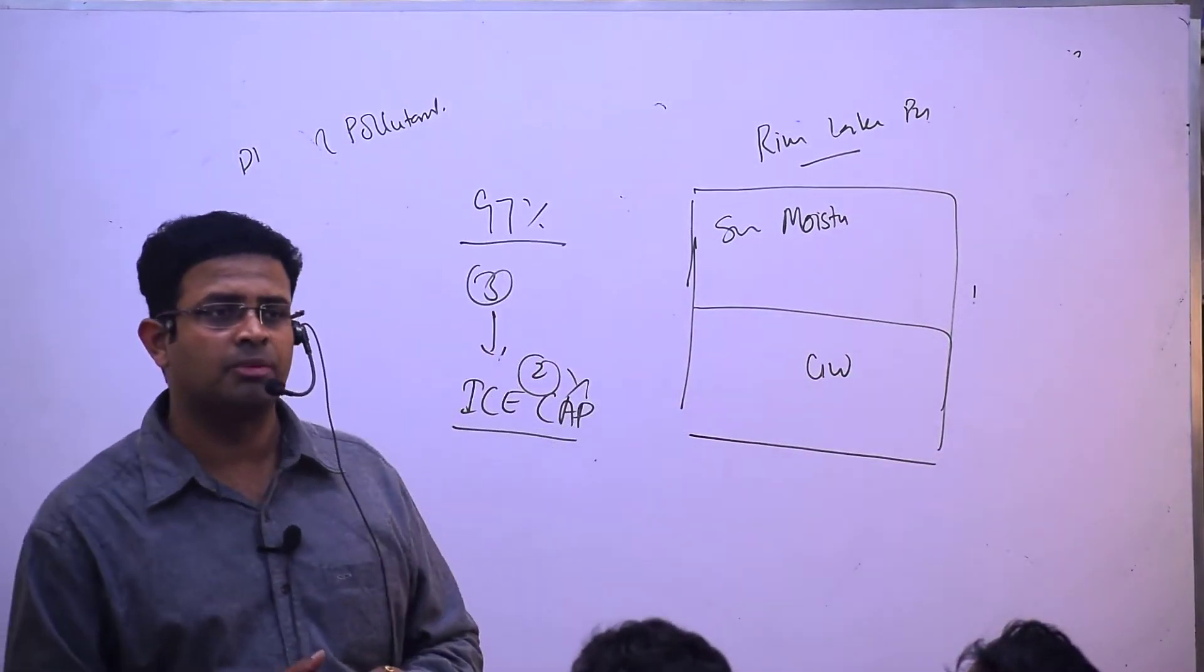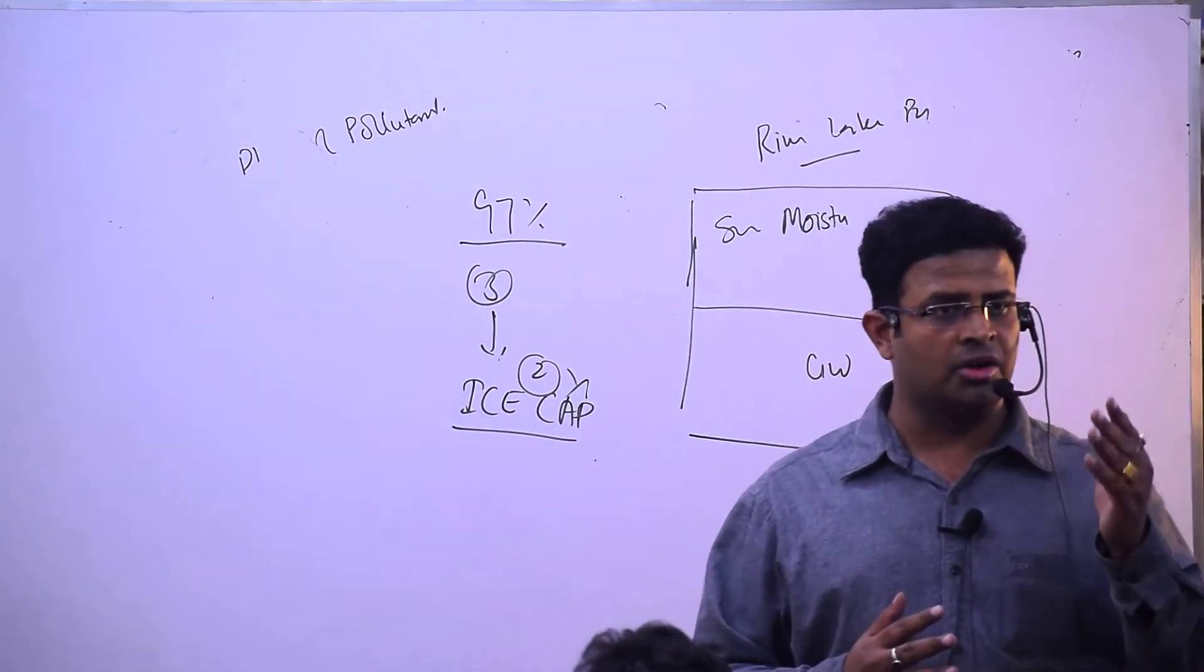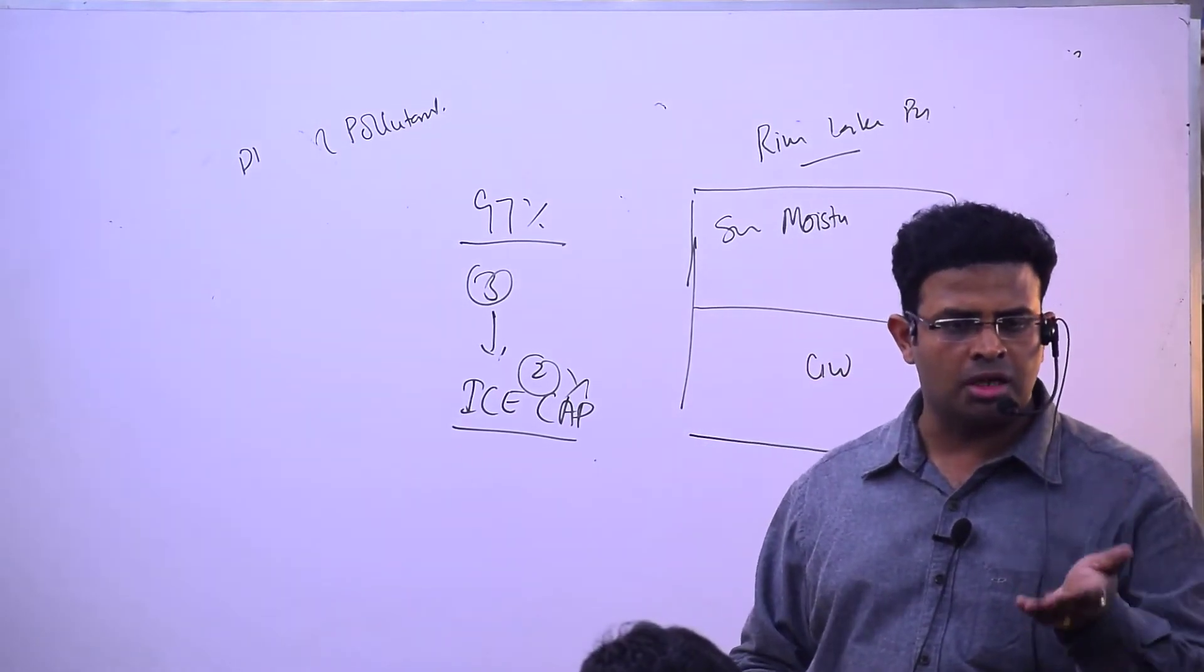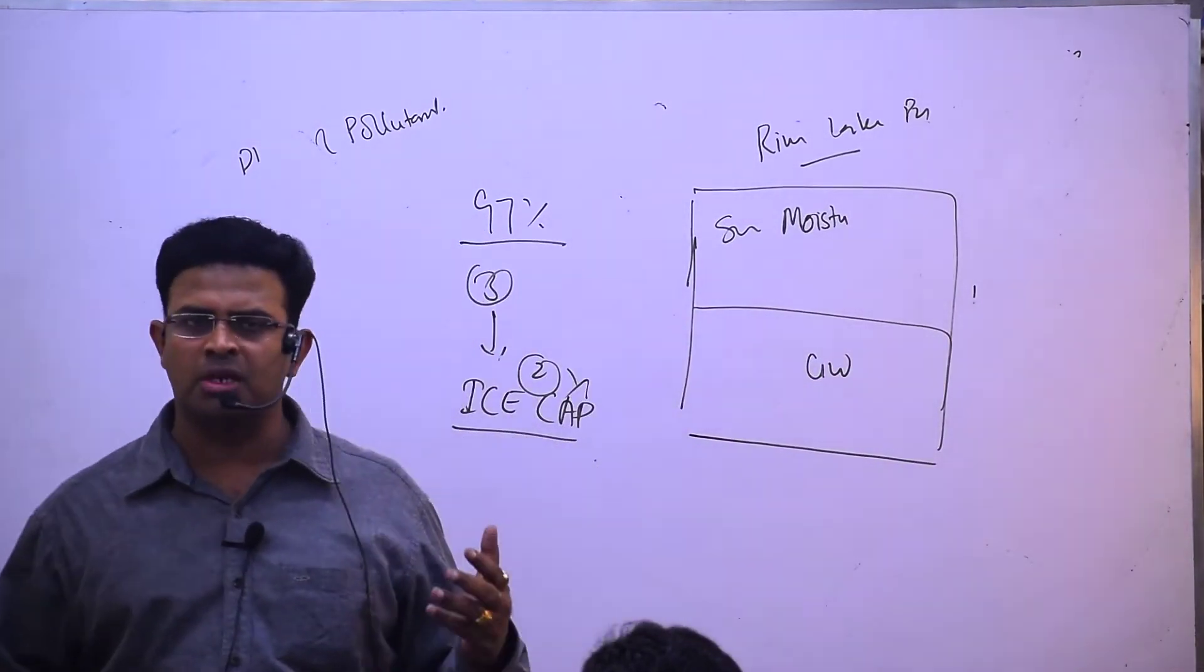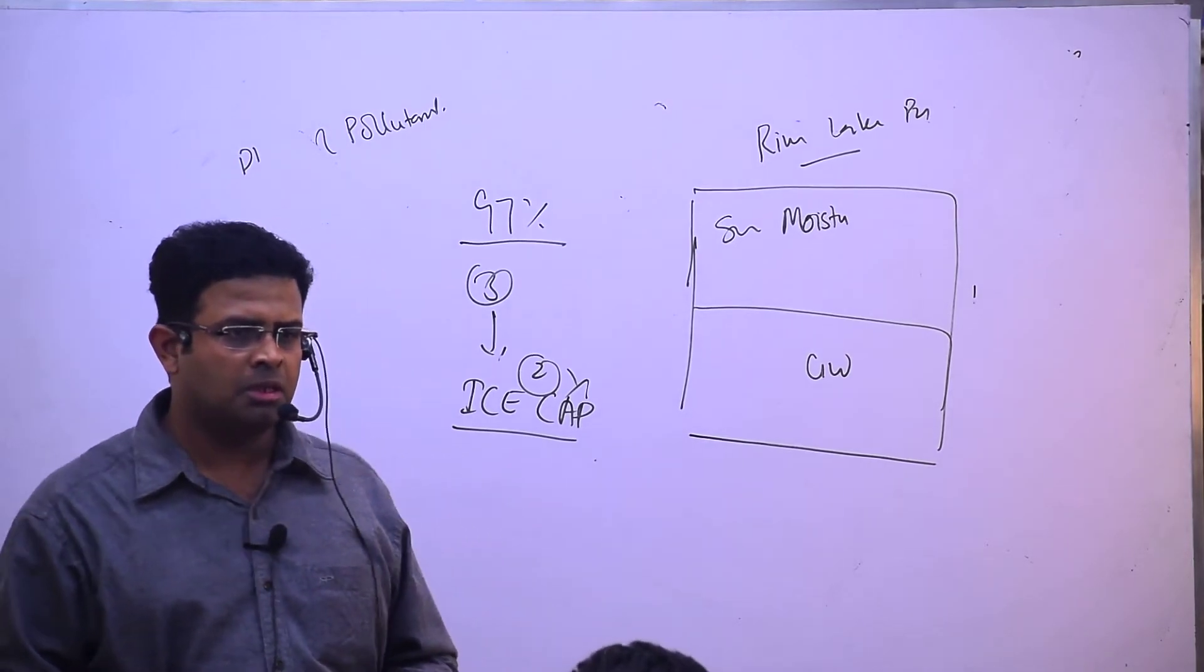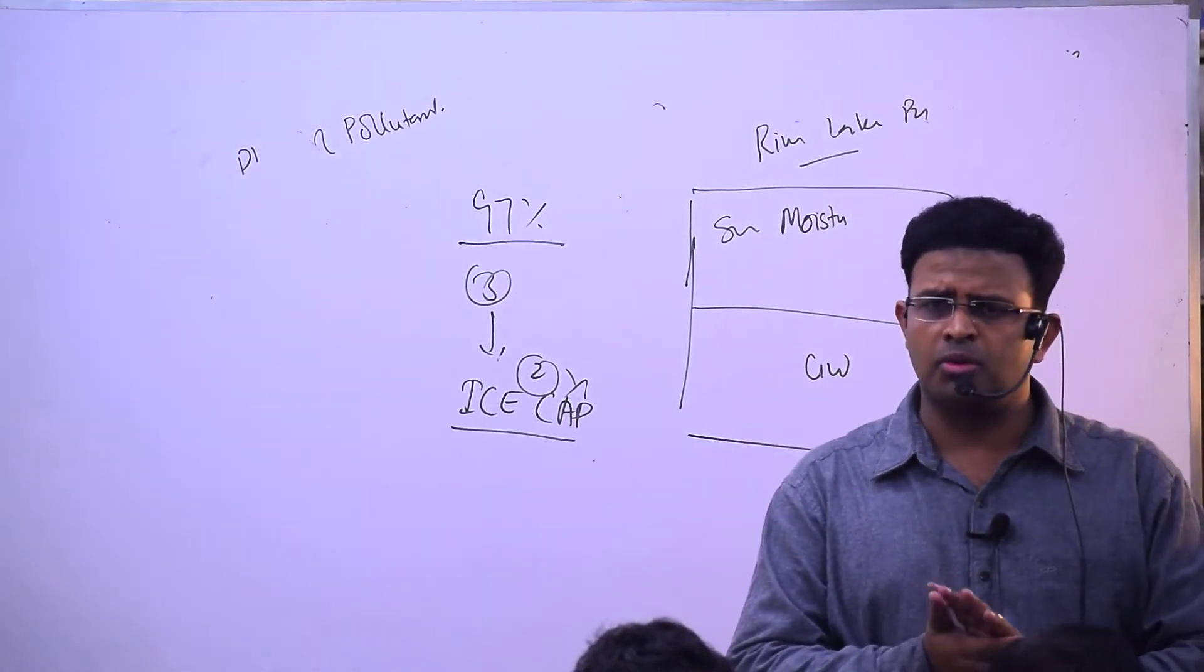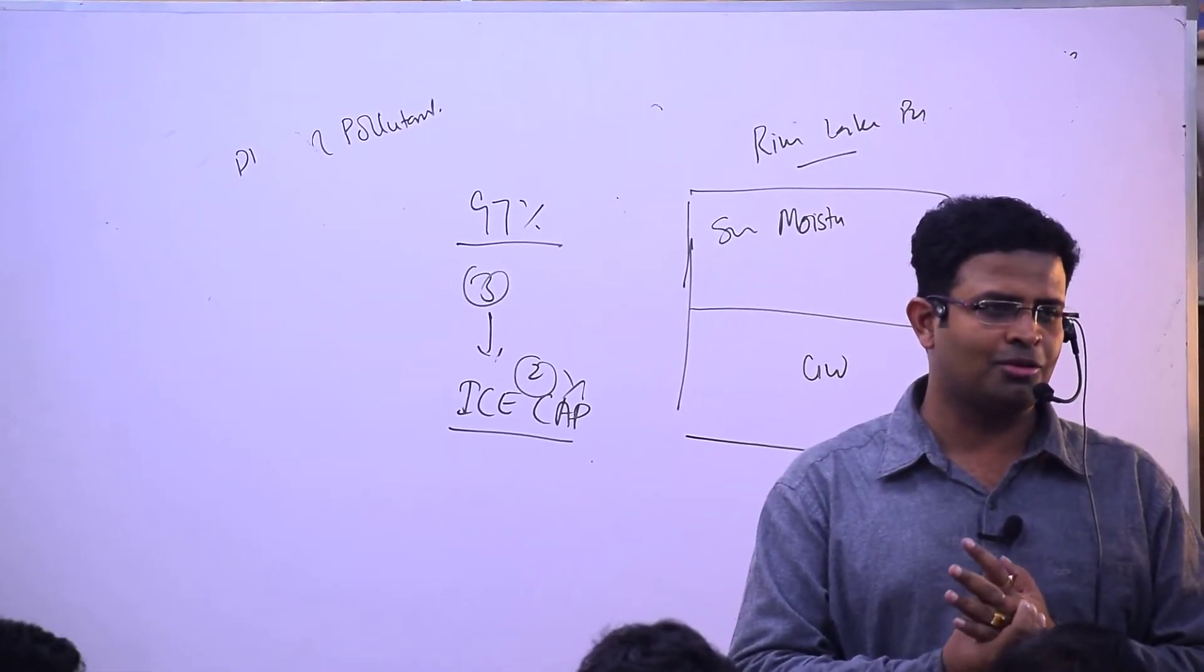Effects include dissolved oxygen release through eutrophication. Other effects include thermal pollution, biocides, pesticides, and heavy metals causing several body problems. Famous diseases include Itai-Itai and Minamata disease.